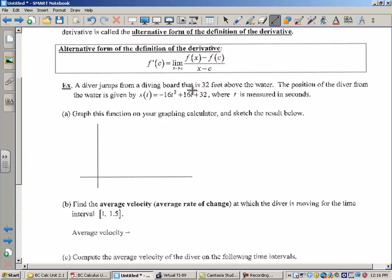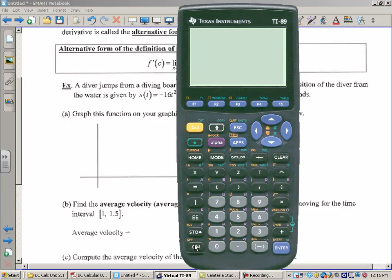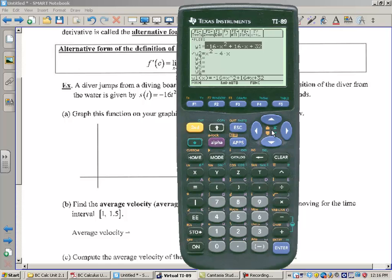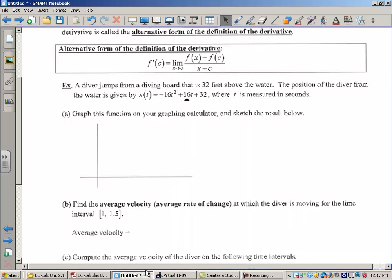So we've got a diver jumping from a diving board. It's 32 feet above the water. The position of the diver from the water is given by this formula. This is a physics formula. By the way, it doesn't say it here, but this right here would be the initial velocity. Graph this on your graphing calculator and sketch the result below. Well, I actually have that here. Let's go to my y equals. I actually have two things that we're doing today. I'm going to turn that one off and I'm going to turn that one on. Here's the graph. It's a negative quadratic, so this shouldn't shock anybody. A negative quadratic looks something like this. This y-intercept here would be 32. So let's come back here and graph that.